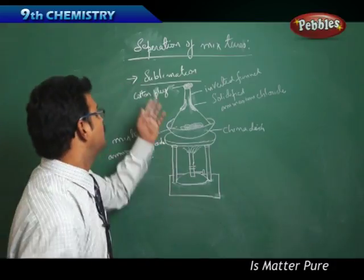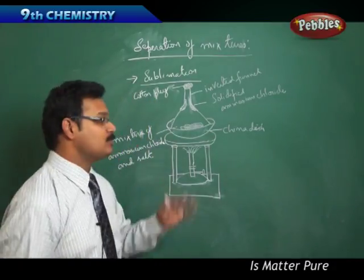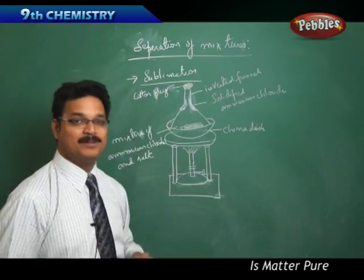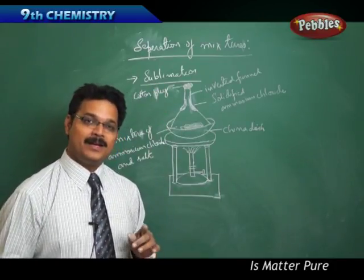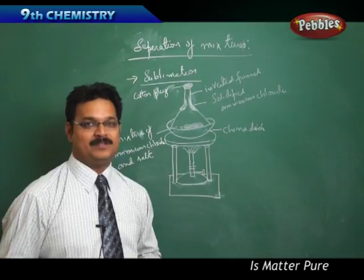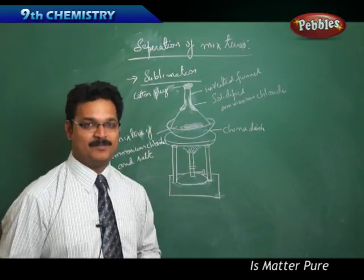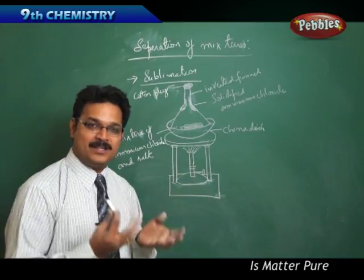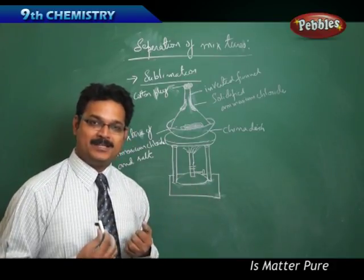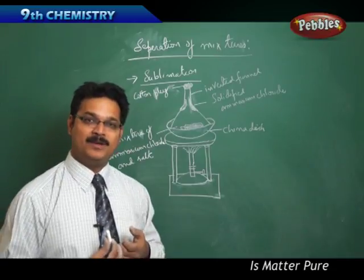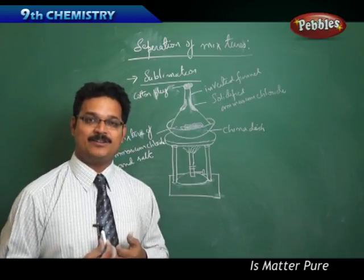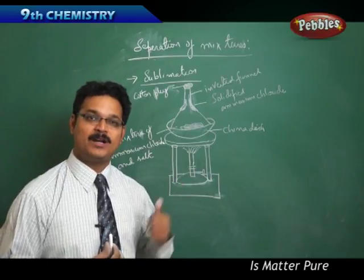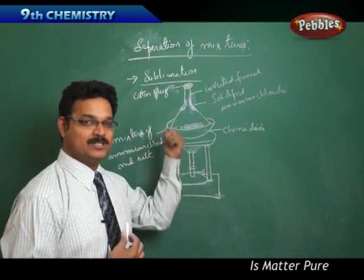The first method is sublimation — separation of components in a heterogeneous mixture by the method called sublimation. Sublimation is a phase change from solid to gas or gas to solid. That means in this process the component we want to get may go to the gaseous state, or from the gaseous state to the solid state. Let us see what type of state change we get using the sublimation method.